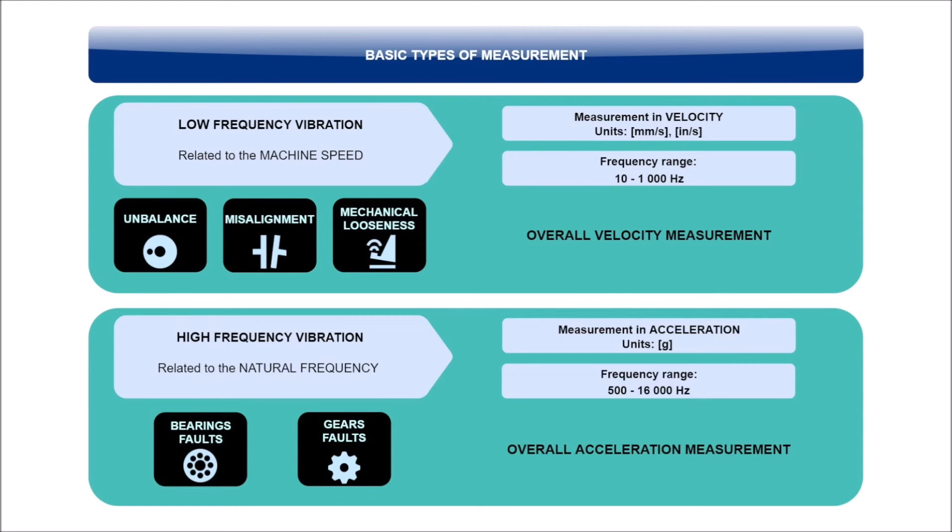So, for quick summarization, there are two important values which we should measure regularly on our machines. Overall velocity in millimeters per second, or inches per second, the lower frequency range, which indicates the general machine condition. Overall acceleration in G, the higher frequency range, which indicates the bearing condition.